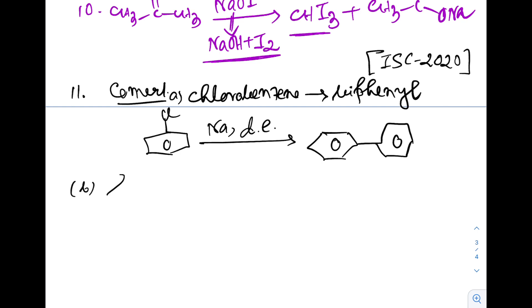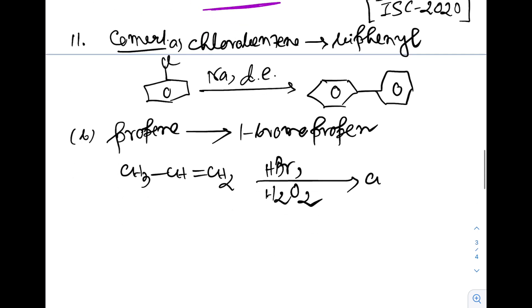Question B was again a conversion from propene to 1-bromopropane. So propene CH3-CH double bond CH2, when it reacts with HBr in presence of hydrogen peroxide, it will produce anti-Markovnikov product, and this one is nothing but 1-bromopropane. This is 1-bromopropane and this one is propene.